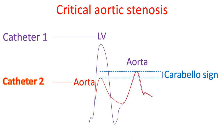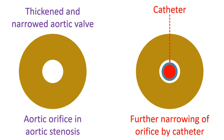When the catheter tip is in the left ventricle in severe aortic stenosis — usually with valve area less than 0.5 square cm — the catheter itself enhances the obstruction across the aortic valve. This leads to a fall in the aortic pressure measured by another catheter.